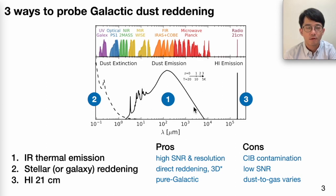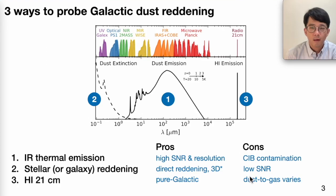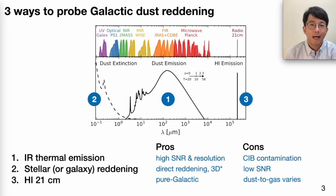The main method widely used is infrared thermal emission, which usually gives relatively high signal-to-noise dust mapping. The second method is in the UV and optical — because the extinction effect is strong, if we can find a sample of background sources with calibratable colors, for example stars or sometimes galaxies, we can use that to probe foreground reddening. The third method is indirect: if we can observe the 21-centimeter line to trace neutral gas H1, we can use that to probe dust reddening, though accuracy will be modulated by the spatially varying dust-to-gas ratio.